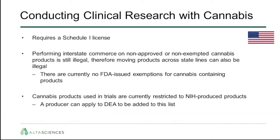Conducting clinical research with cannabis involves some regulatory considerations and hurdles. In the US, it requires a Schedule I license to conduct research with a Schedule I product. Performing interstate commerce on non-approved or non-exempted cannabis products is still illegal, meaning movement of products across state lines can also be illegal. There are no currently issued exemptions for cannabis-containing products by the FDA. Cannabis products used in trials are currently restricted to NIH-produced products, limiting the quality and composition of the plant. A producer can apply to the DEA to be added to the list, but competition is very restricted in the US.